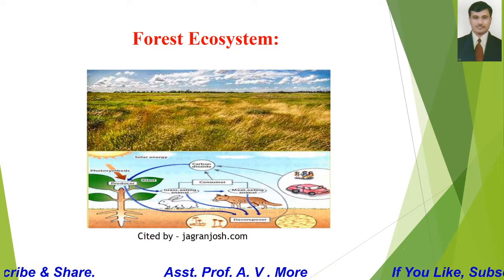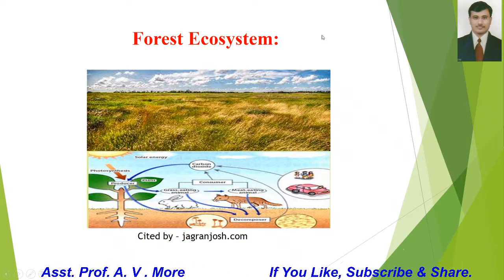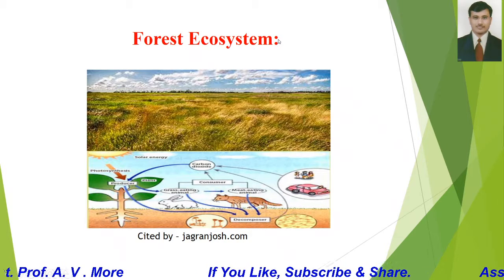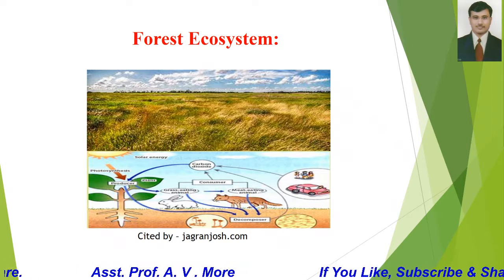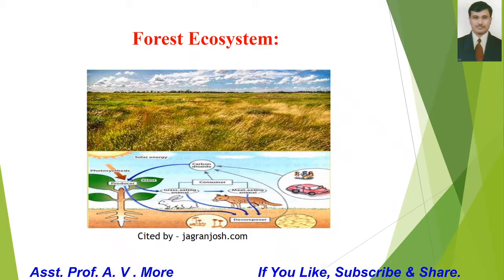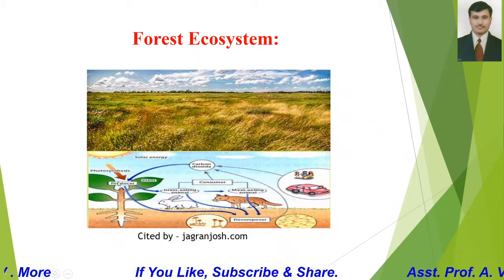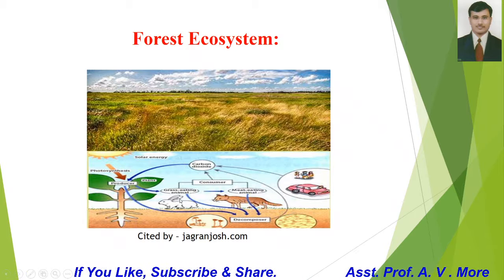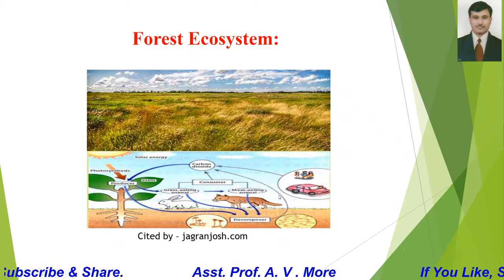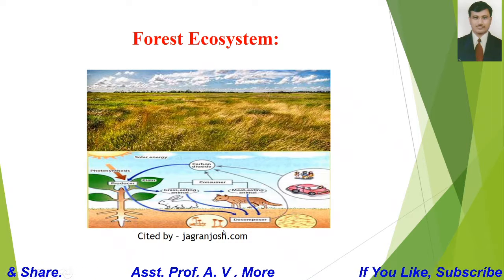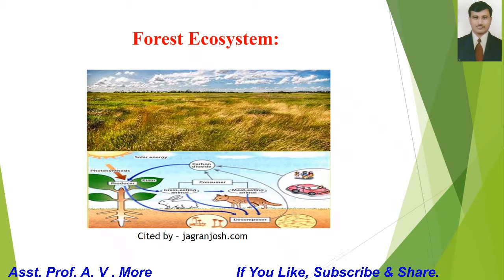This image represents the grassland ecosystem. These are the producers, and these are the primary consumers, secondary consumers, and tertiary consumers, and these are the decomposers.